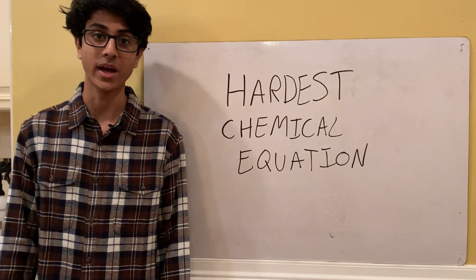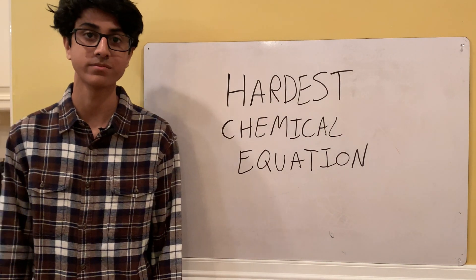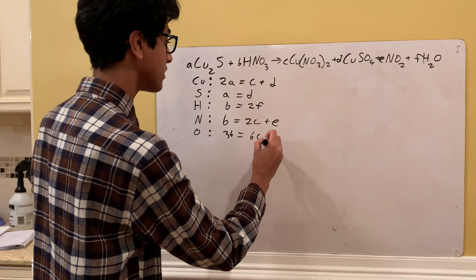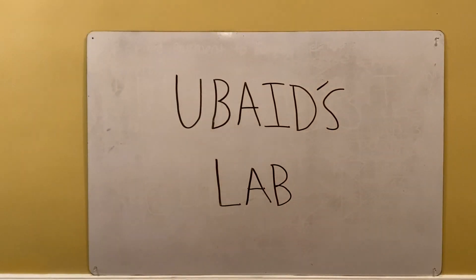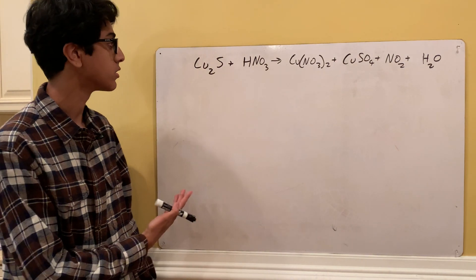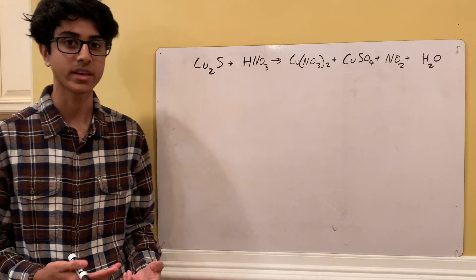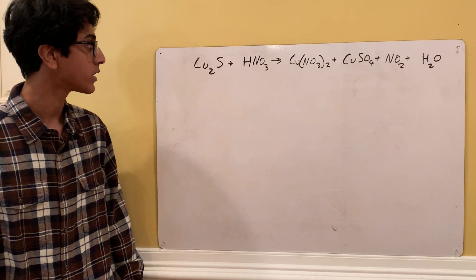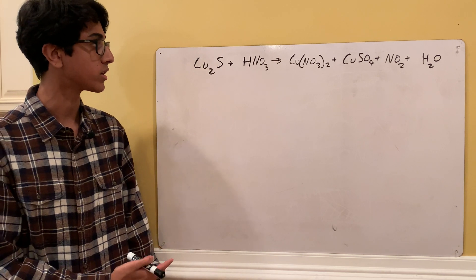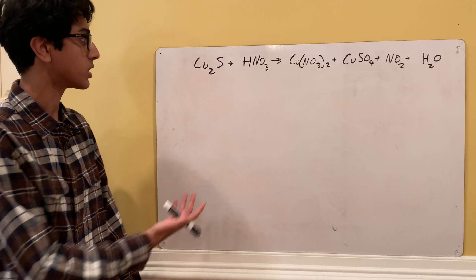Welcome back to Ubad's lab. Today I'm going to be balancing the world's hardest chemical equation. This was the hardest one I could find that didn't have subscripts over a thousand, because then you'd just have to use a calculator and it's not fun. For this one, we're going to be using systems of equations to find what the coefficients are in front of each compound.